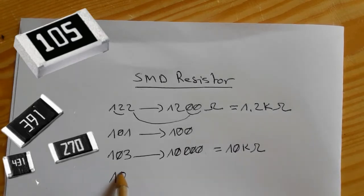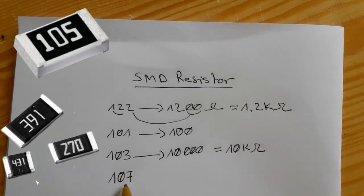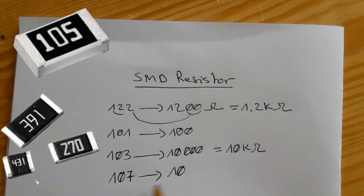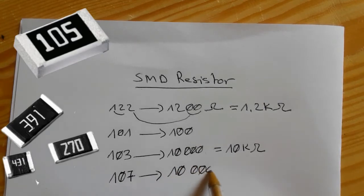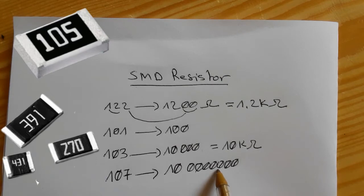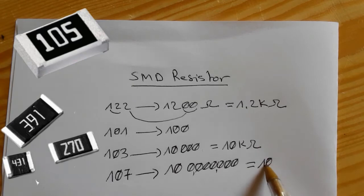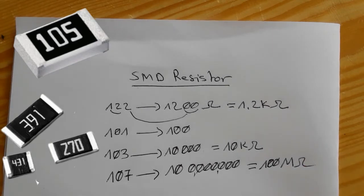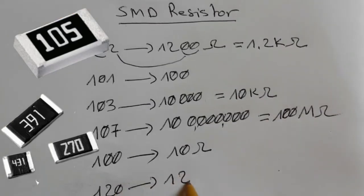For example, 107 means we add seven zeros to 10, giving 10,000,000 ohms — that's 100 mega-ohms, since one mega-ohm equals one million ohms.